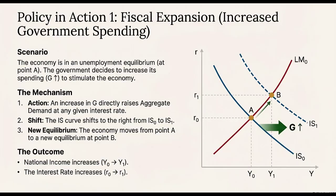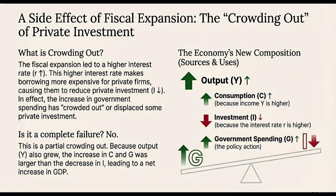The sources also mention a key difference between using government spending versus a tax cut. An increase in government spending is a direct dollar-for-dollar injection into aggregate demand. A tax cut, on the other hand, first just increases people's disposable income — and people might save some of that extra income. They'll save a fraction of it, so the initial boost to aggregate demand is weaker, which means the IS curve shifts by less.